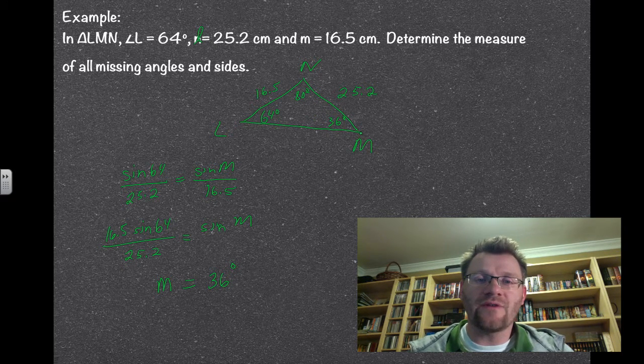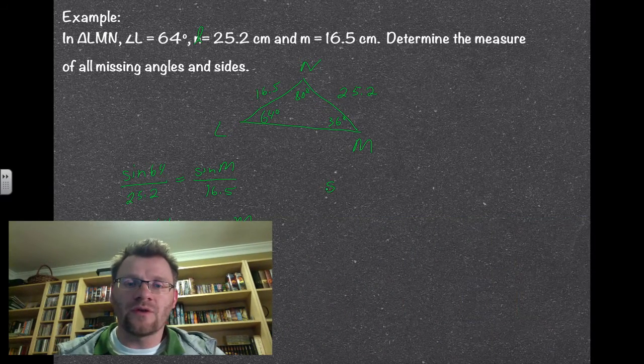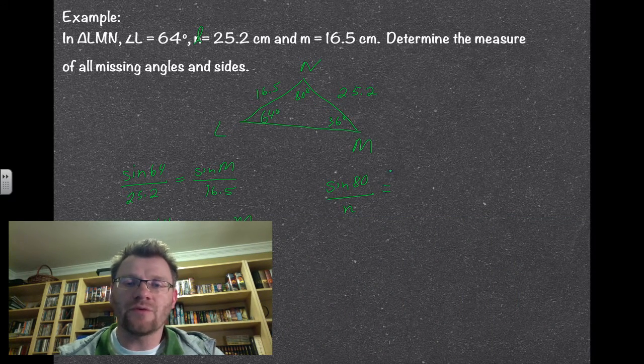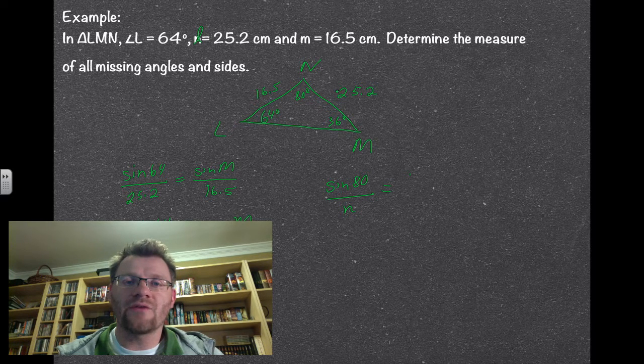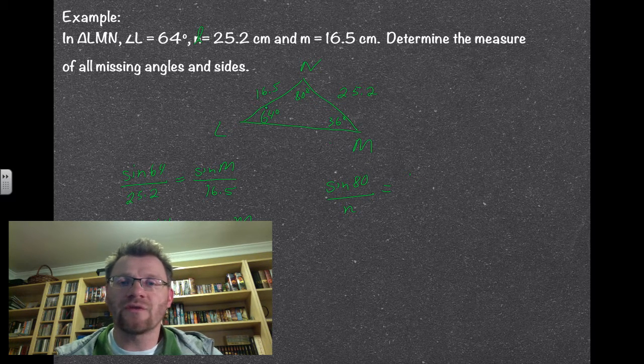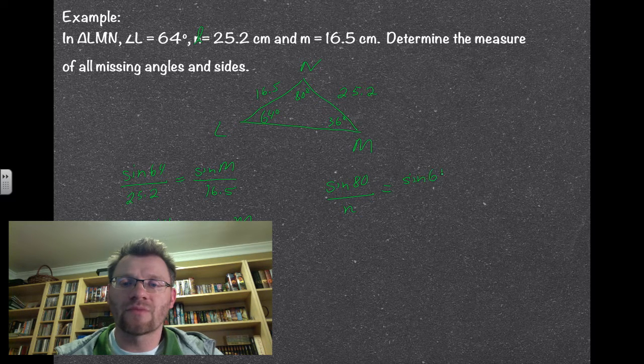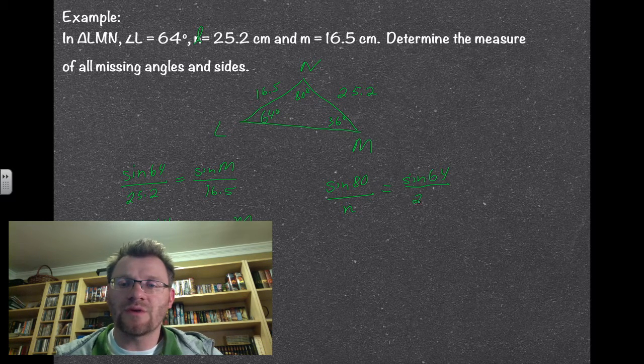Now I can use the law of sines again to find the missing side. So sine of 80 divided by n equals, and we could use either of these ratios, I'm going to use sine of 64 divided by 25.2.